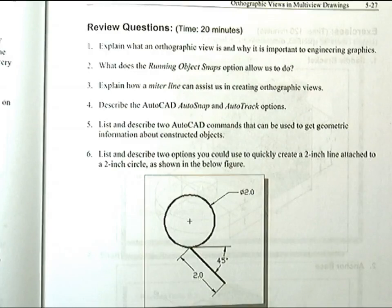Number three: Explain how a miter line can assist in creating orthographic views. The 45 degree miter line is a simple and straightforward procedure to transfer measurements in between the top view and the side view. Number four: Describe the AutoCAD AutoSnap and AutoTrack options.